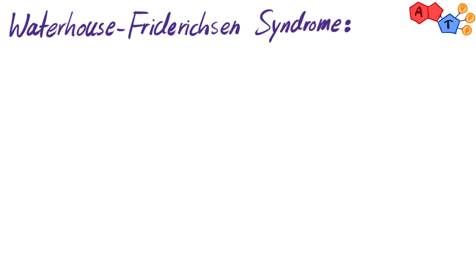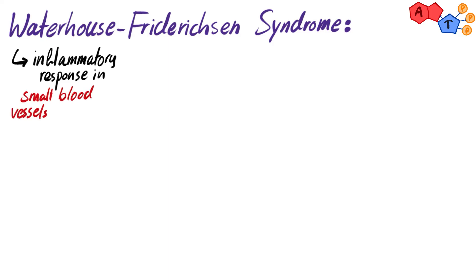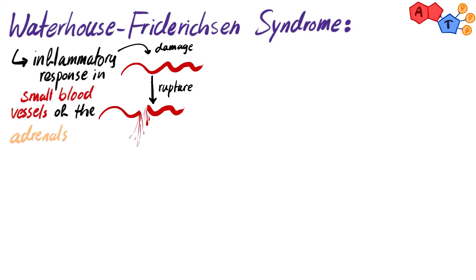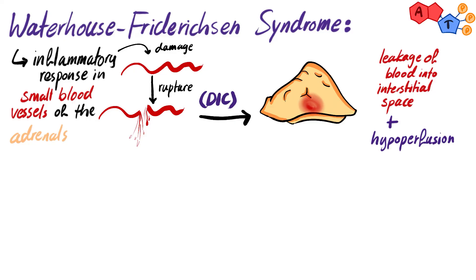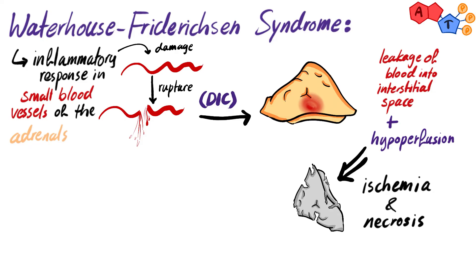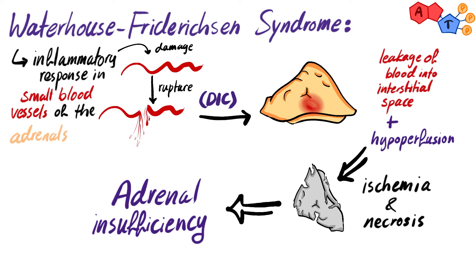Now, Waterhouse-Friderichsen syndrome: if the inflammatory response occurs in the small blood vessels of the adrenal gland, it causes endothelial damage and vessel rupture. The DIC condition makes it harder to form clots properly, leading to blood leakage into the interstitial space of the adrenal gland. Combined with generalized hypoperfusion, this results in ischemia and necrosis of the adrenal gland, eventually causing acute adrenal insufficiency, also known as Addisonian crisis.